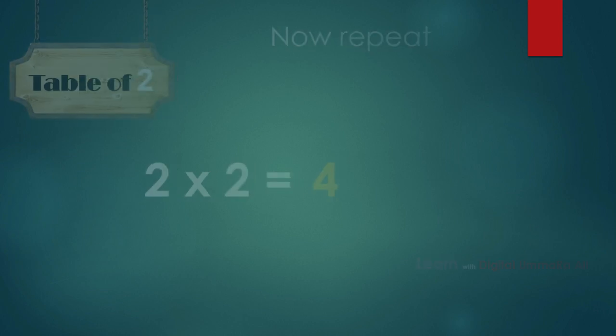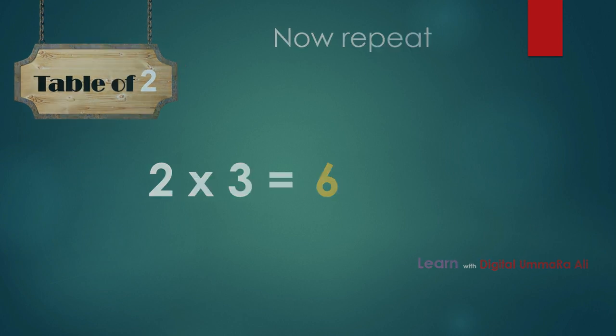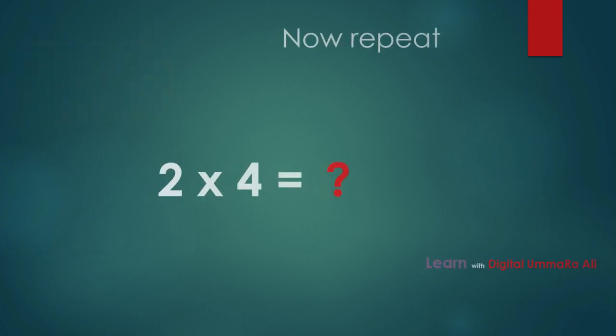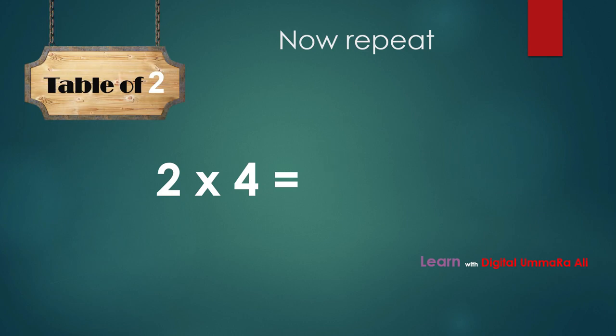Two threes are... yes, two threes are six. Two fours are... two fours are eight, two fours are eight.